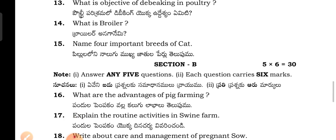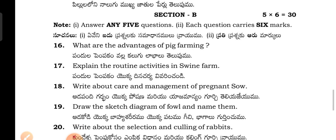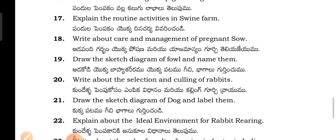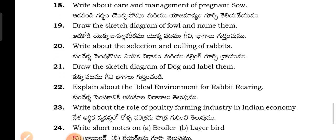What are the advantages of pig farming? Explain the routine activities in swine farming. Write about care and management of pregnant animals. Draw the sketch diagram of cow and name them. Write about the selection and culling of rabbits. Draw the sketch diagram of cow and name them. Draw the sketch diagram of dog and label them.